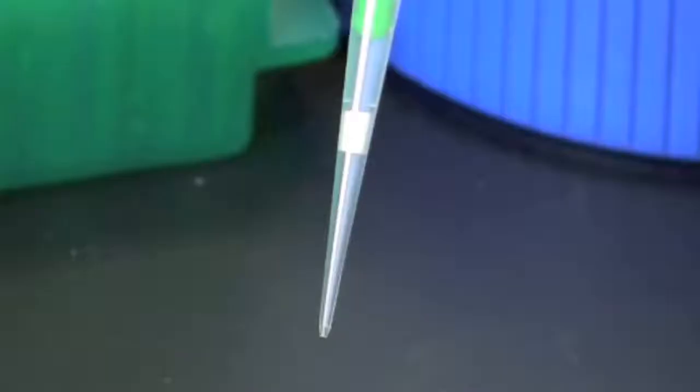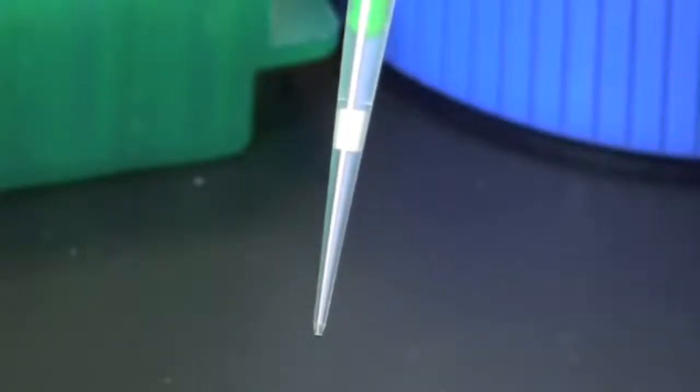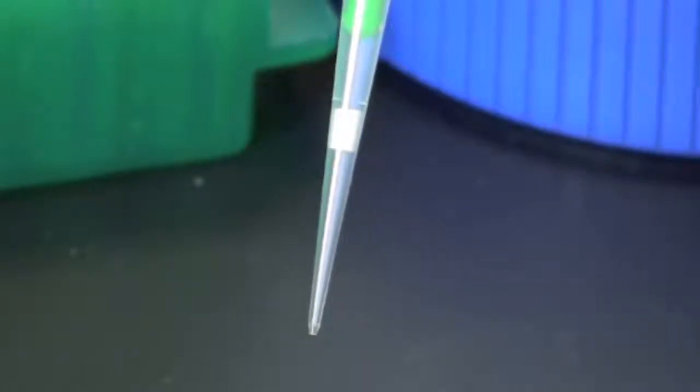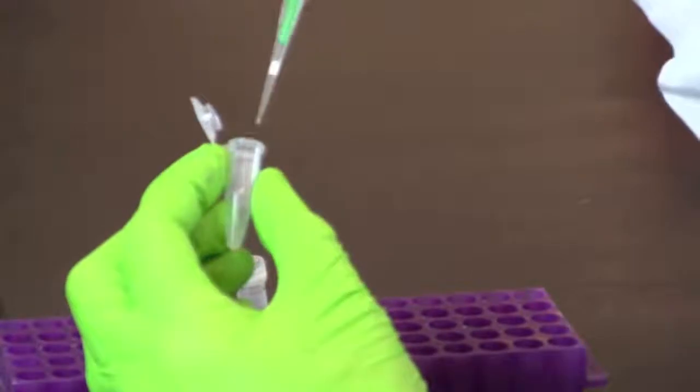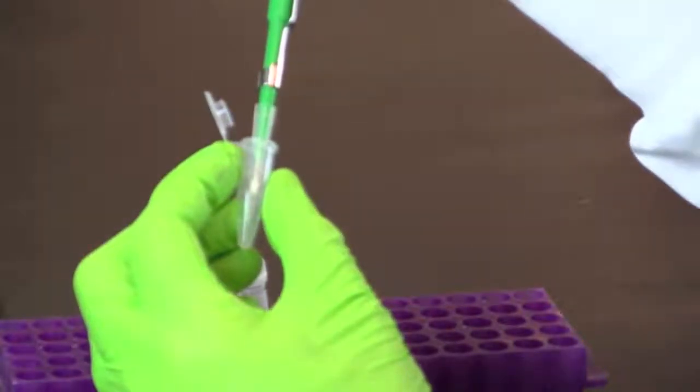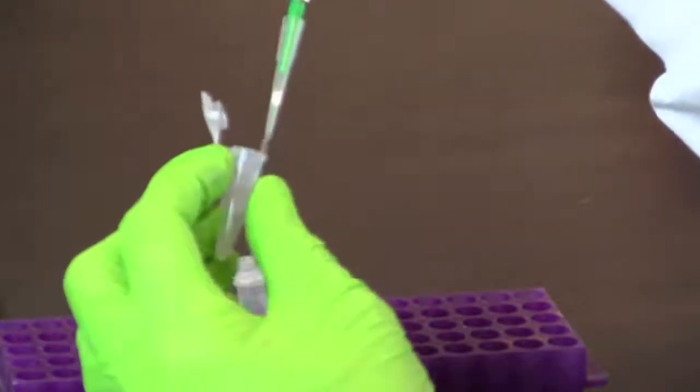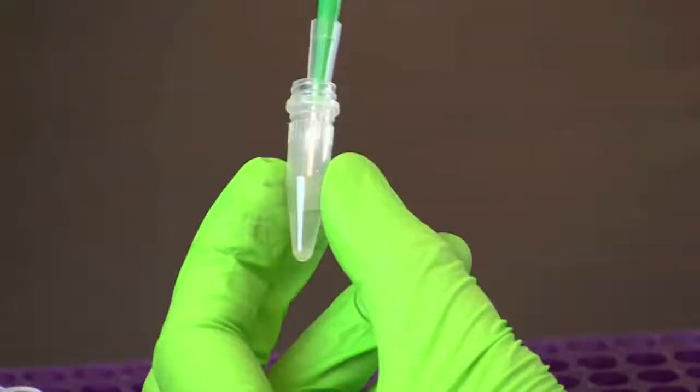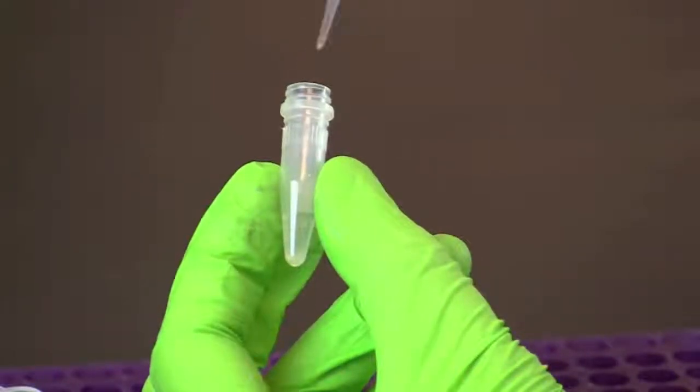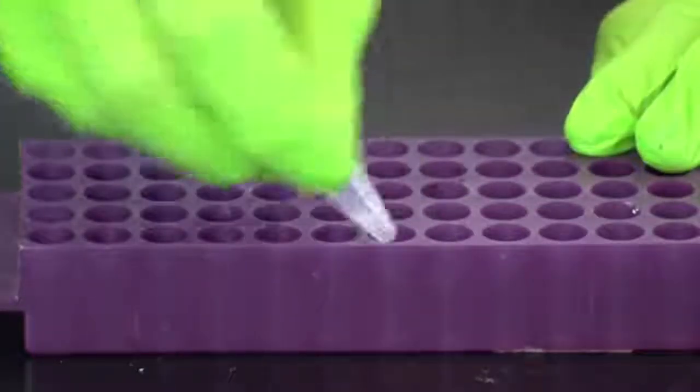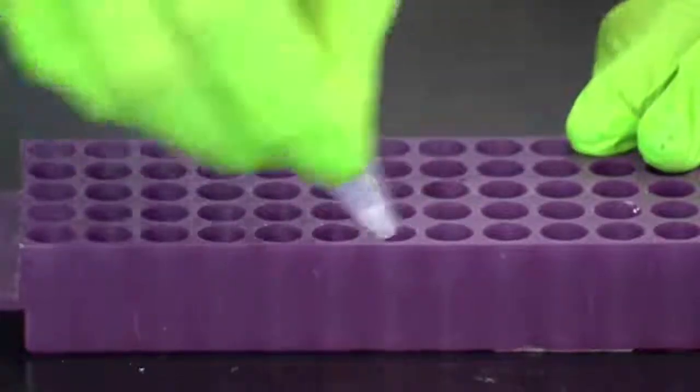Set your micropipet to 20 microliters. Always use aerosol barrier tips when setting up PCR reactions to prevent transferring aerosols from the pipette to the sample. Transfer all of the resuspended cells to a screw cap tube containing instagene matrix. This may require multiple transfers. Screw the cap on tightly and vortex or shake the tubes.